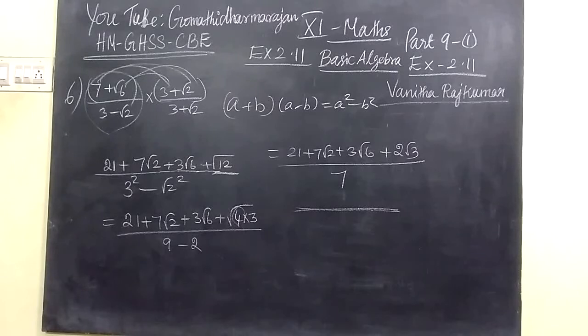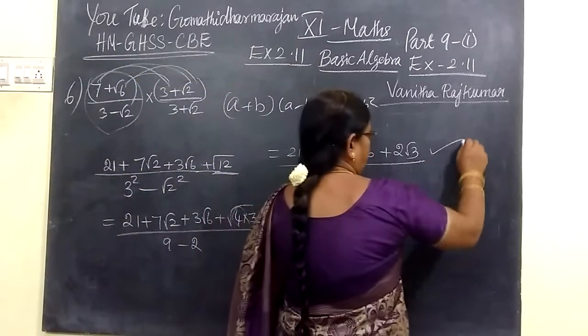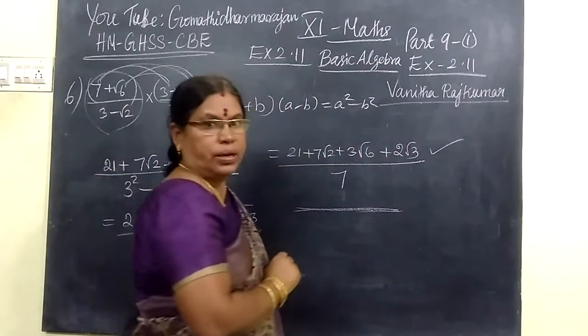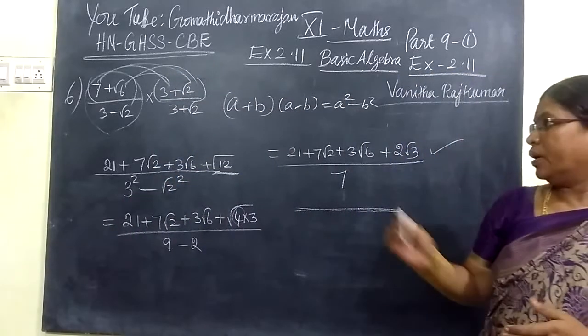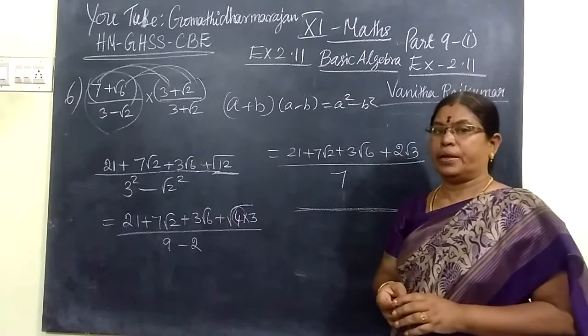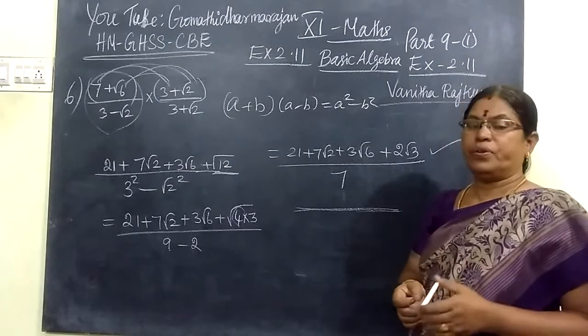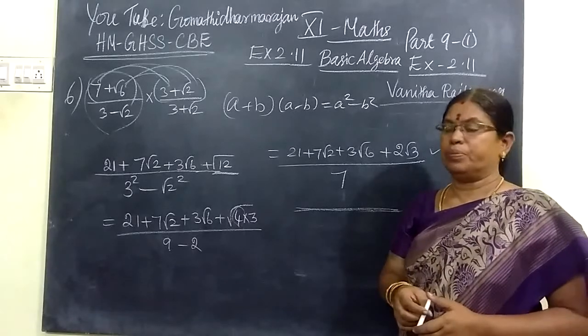Now the interior answer for that: 21 plus 7 root 2 plus 3 root 6 plus 2 root 3 by 7. This is the parallel I take. She has commented on this and I am uploading this again. If you like this video, you please share it to others.